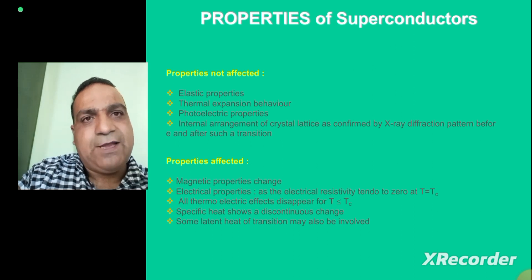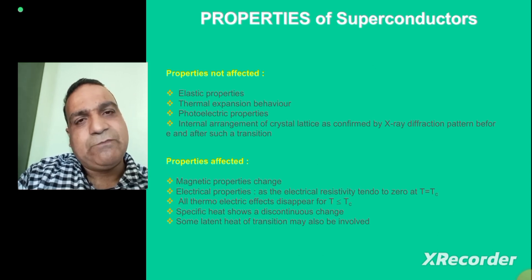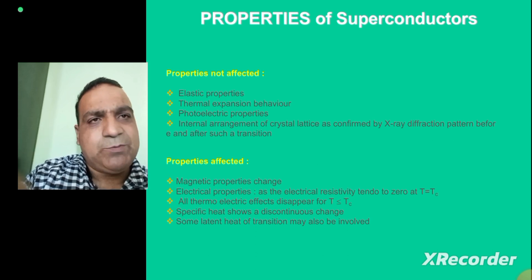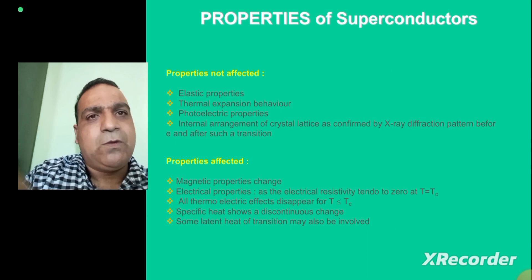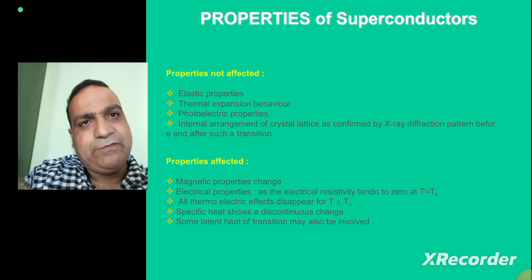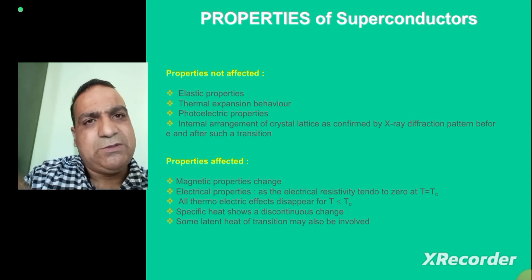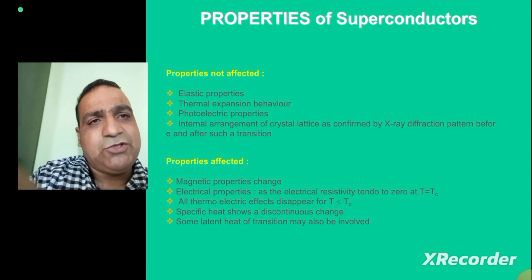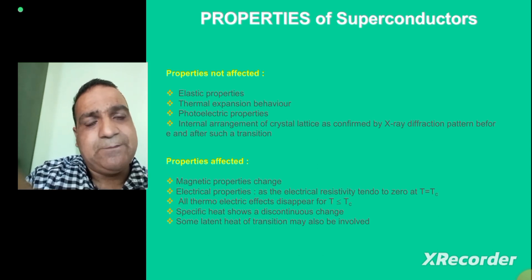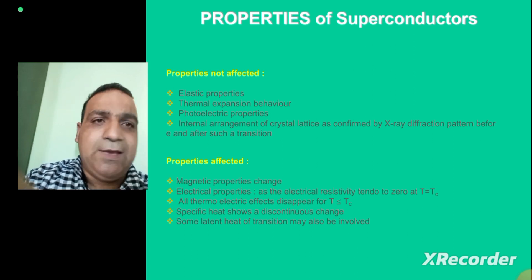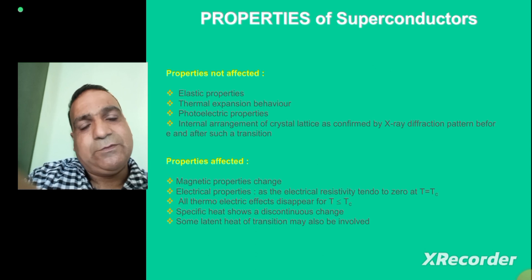When there is a phase transition in the superconductor, we expect that some properties should change. However, we observe that there are some properties which do not change when a normal metal goes from normal state to the superconducting state. The properties not affected are: the elastic properties of these materials, thermal expansion behavior, various photoelectric processes, and the crystal structure of the material.